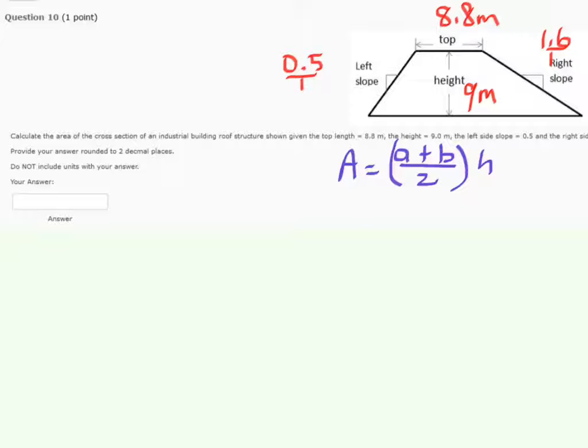So in this case, we're doing pretty good because we happen to know that the top is 8.8 meters, so we've got 8.8 meters, plus we need to know the length of the bottom, which we do not know, and of course we have to divide that by 2, and then multiply that by 9 meters, because the height is 9 meters. So all we need to do is find out what the bottom is. What is b equal to? What is the length across the bottom?